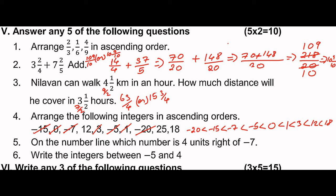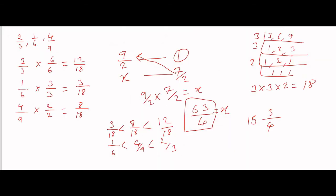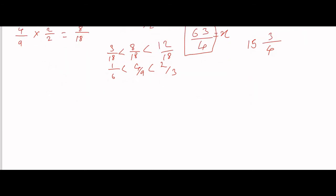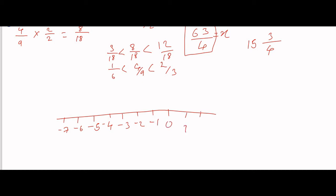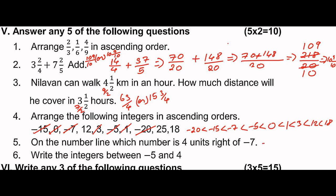On the number line, which number is 4 units to the right of minus 7? Starting at minus 7 and moving 4 units right: minus 6, minus 5, minus 4, minus 3. So minus 3 is our answer.